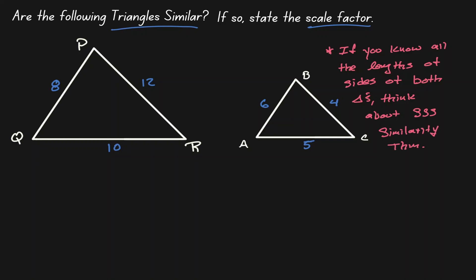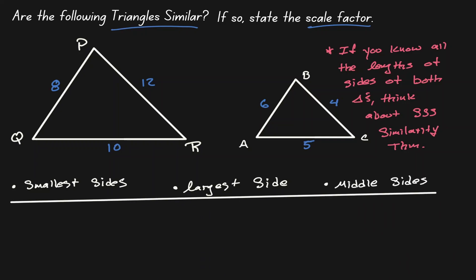We need to be organized in how we look at the proportions of the sides of these triangles. We're going to be comparing the smallest side on the left triangle with the smallest side on the right triangle, the largest side of the left triangle with the largest side of the right triangle, and the middle side on the left triangle with the middle side on the right triangle — the side that is not the largest or the smallest. So now let's identify those proportions.